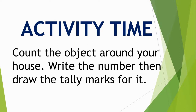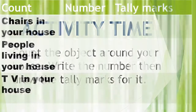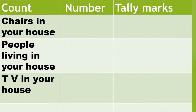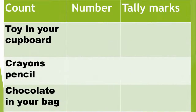Now students, activity time! Count the objects around your house, write the number, and then draw the tally marks. You have to count chairs in your house, people living in your house, and TVs in your house. Also count toys in your cupboard, crayons, pencils, and chocolates in your bag. Write the number and draw the tally marks.